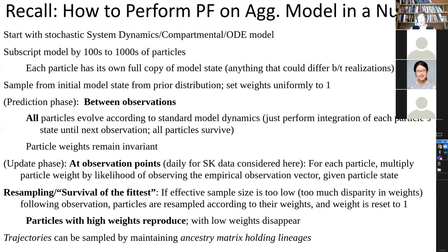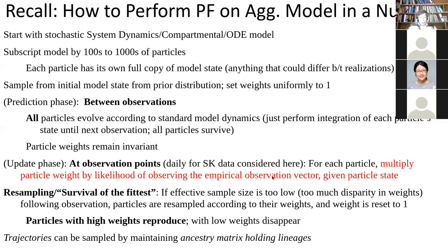A particle with a weight of 0.2 has twice the chance of being drawn as one with a weight of 0.1. The weights are so-called importance weights, indicating its relative frequency in the distribution. At observation points, we compare what a given particle predicts with what's observed empirically, and we use the likelihood function for that. The resulting value is multiplied by the existing weight, and then the weights are renormalized to sum to one.